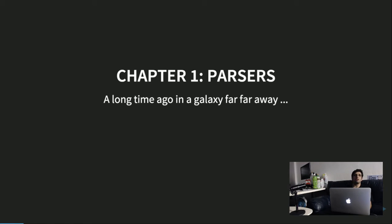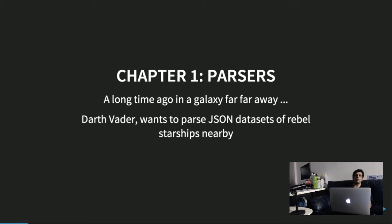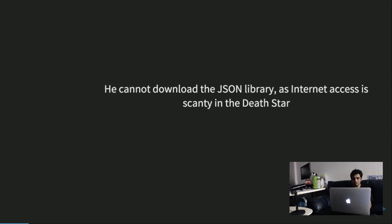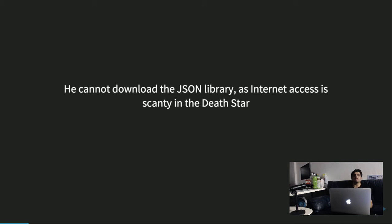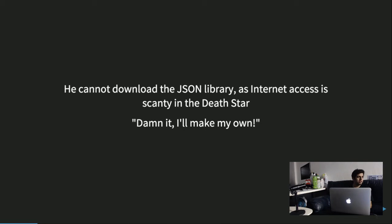So a long time ago — and we're going to start with a story — a long time ago, in a galaxy far, far away, Darth Vader wants to parse JSON datasets of Rebels starships. It's a quite typical use case. Problem is he can't download his favorite JSON library because internet access is a little scarce on the Death Star. So he says, 'damn it, I'll make my own.' He wants to implement his own JSON parsing library from scratch.